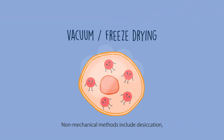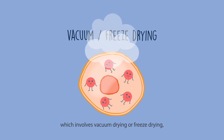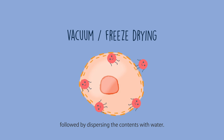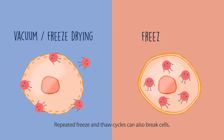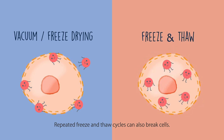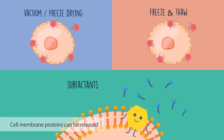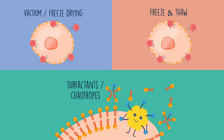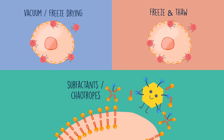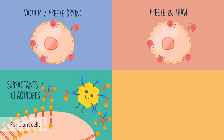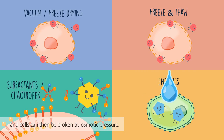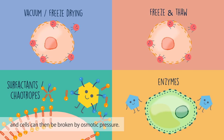Non-mechanical methods include desiccation, which involves vacuum drying or freeze drying, followed by dispersing the contents with water. Repeated freeze and thaw cycles can also break cells. Cell membrane proteins can be released by using surfactants or chaotropes. For plant cells, the cell walls can be digested by enzymes, and cells can then be broken by osmotic pressure.